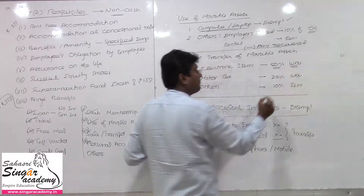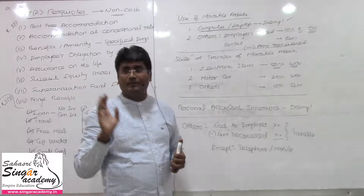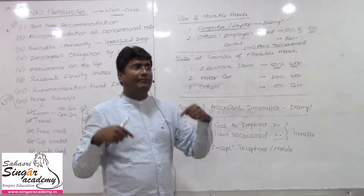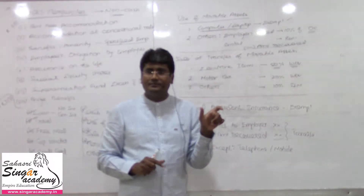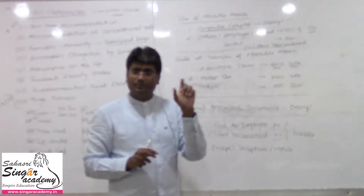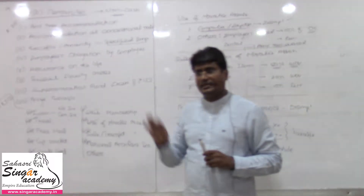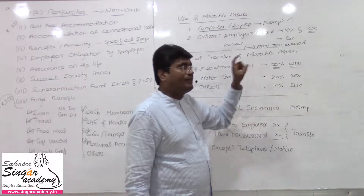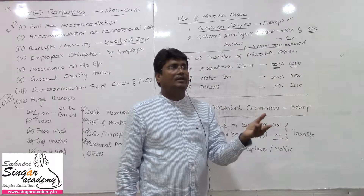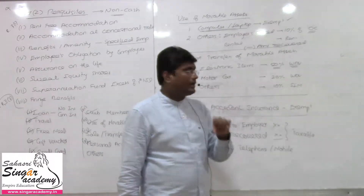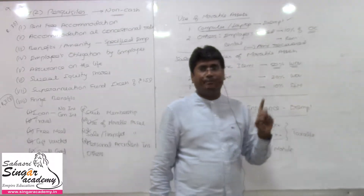For electronic items, 50% WDV method is applied. For motor car, 20% WDV method is applied for every completed year. For any other items, 10% SLM (straight-line method) per completed year is deducted. The company transfers these assets to the employee either free or at a nominal amount after use — including laptops and computers used for official purposes.